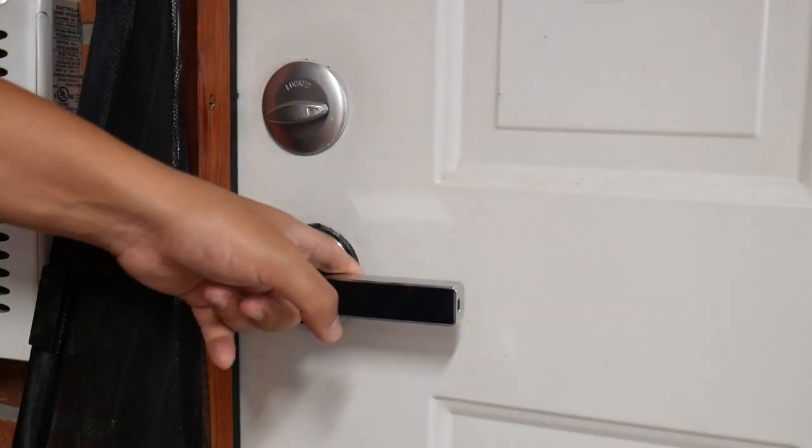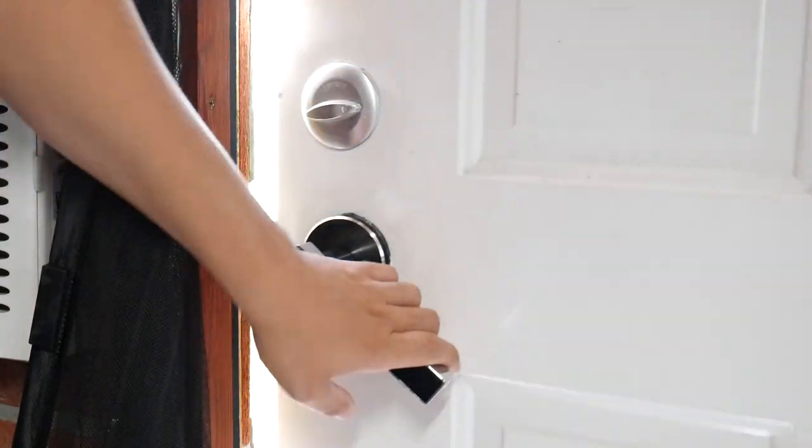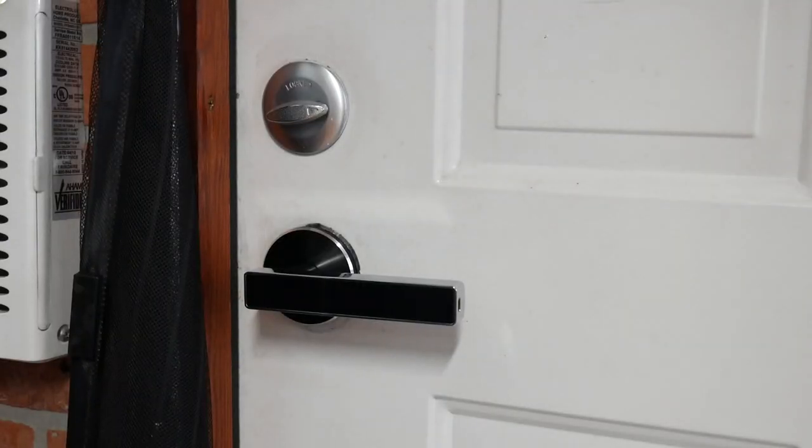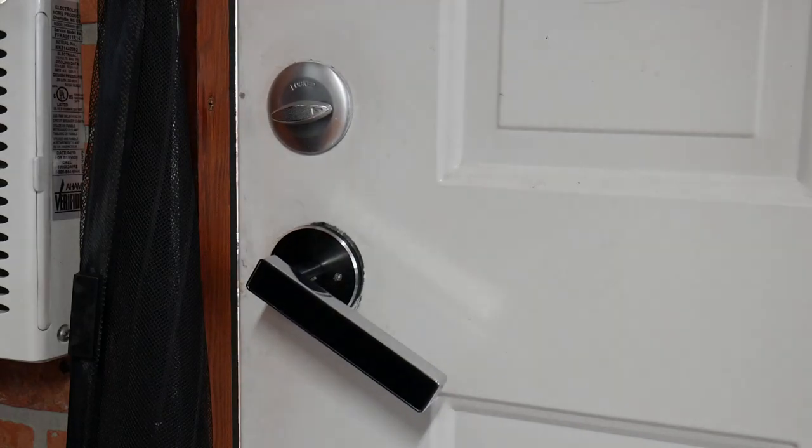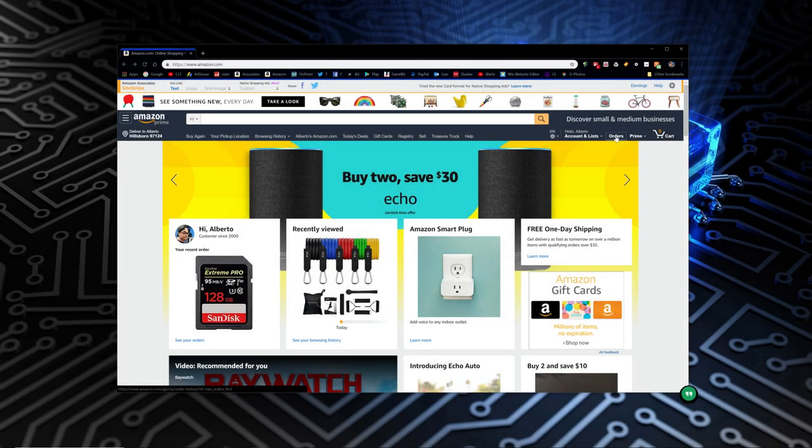Now you can see the fingerprint reader is gone because it's on the outside the correct way. You can see every time you open the door from the inside, it's always gonna open. I'm outside turning the handle without the fingerprint reader and it won't do nothing until I touch the sensor and then I can start opening the door.